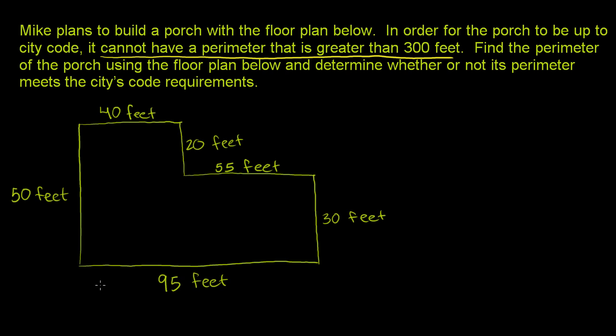So to find the perimeter of this porch, we just have to add up the lengths of the different sides. Let's do that. We're going to add up 40 plus 20 plus 55 plus 30 plus 95 plus 50.